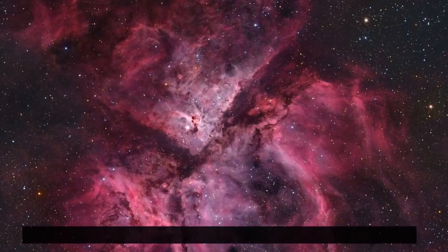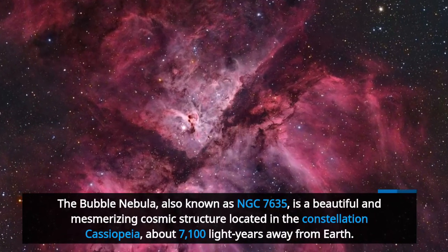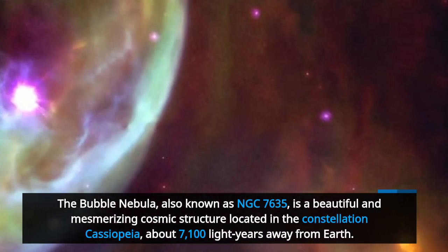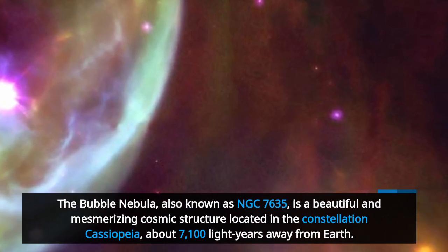The Bubble Nebula, also known as NGC 7635, is a beautiful and mesmerizing cosmic structure located in the constellation Cassiopeia, about 7100 light-years away from Earth.